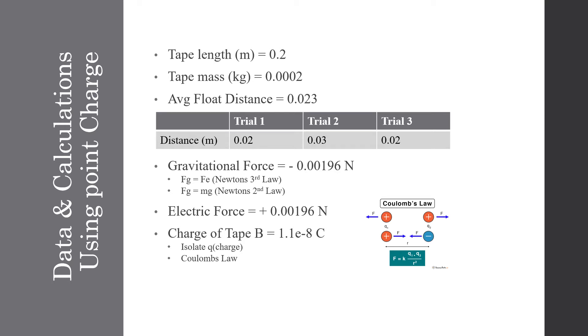Our gravitational force that we know of is going to be negative 0.00196 newtons. That's going to be the mass of the tape times its gravitational acceleration. And then knowing that, we know that our electric force is going to have to equal the same thing and that they're going to cancel each other out.